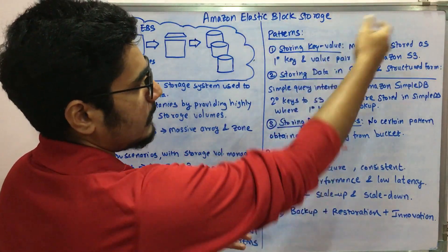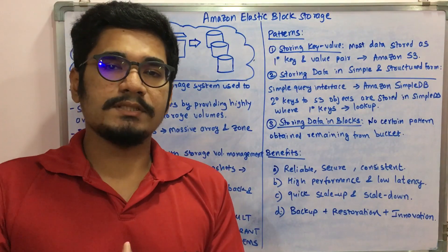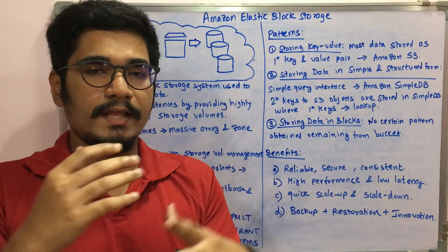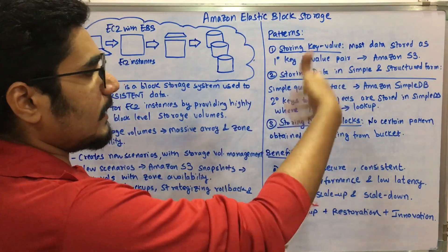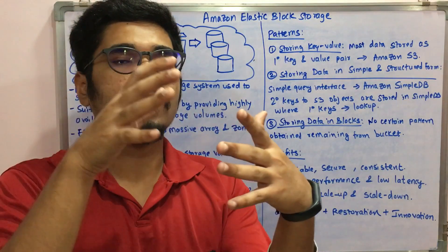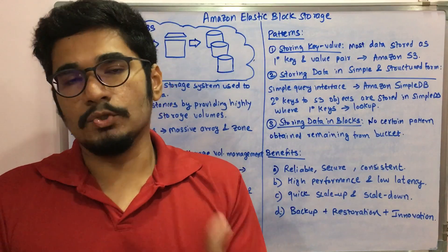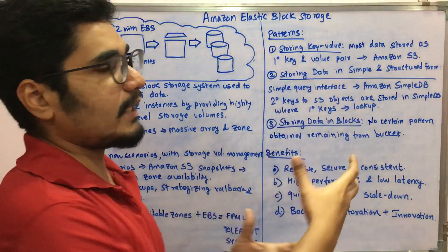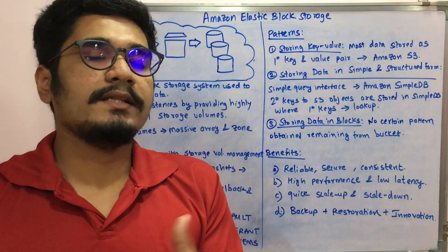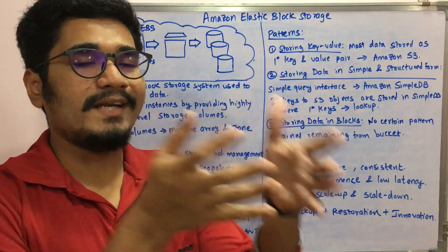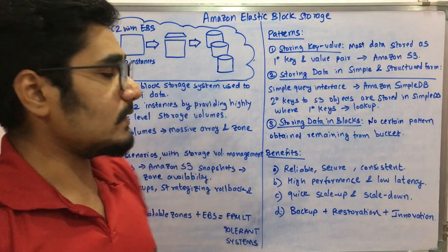Secondary keys to S3 objects are stored in SimpleDB, where primary keys are used as a lookup. From a lookup table, you find which key-value pairs match and you get the reference to that particular data in S3. Third, for data that is not in key-value format or structured format, the remaining data from the bucket with no defined form is stored in blocks. These are the three patterns for how data can be stored in EBS.